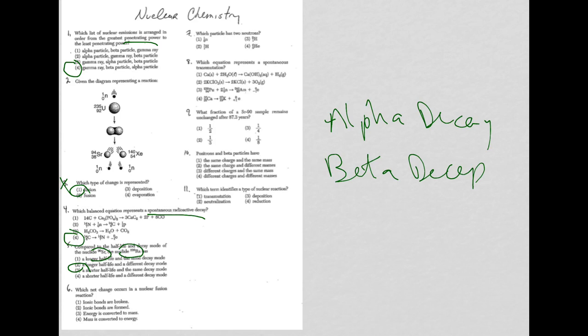Question six: which net change occurs in nuclear fusion? With fusion or fission, you have mass converted into energy - Einstein's equation E equals mc squared. It's just a fact you need to know.